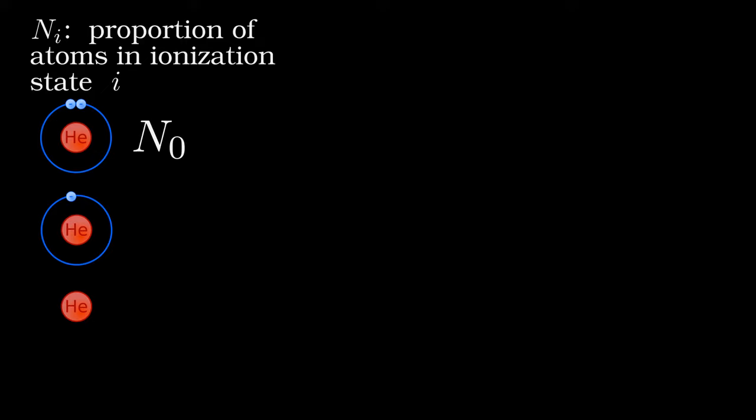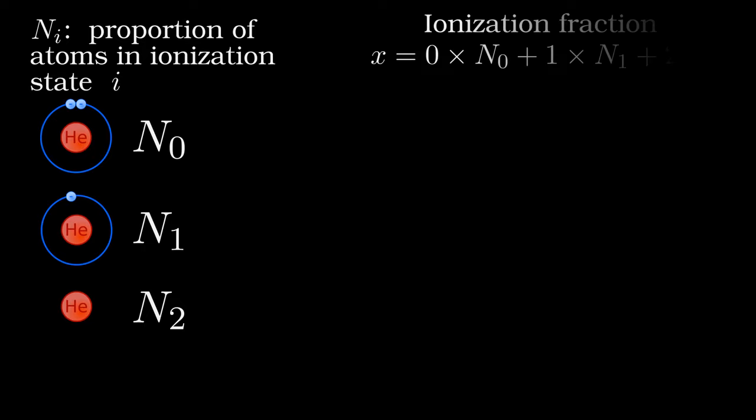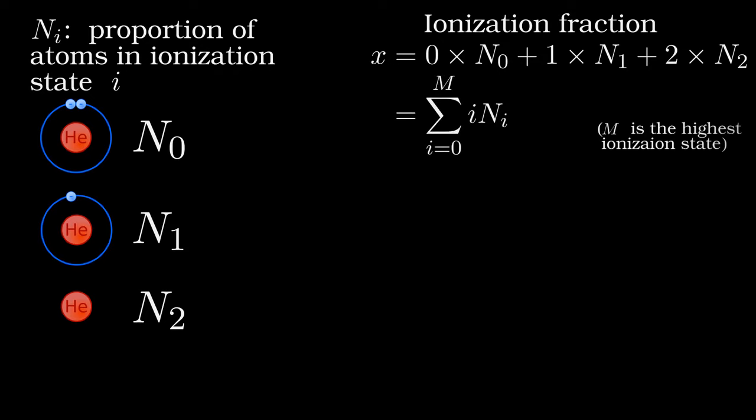As we have seen, atoms in different states of ionization are present in different proportions in the plasma. Let's label these proportions with the letter N, and then a subscript for the number of times that group of atoms has been ionized. The ionization fraction is then a weighted sum over these fractions. Zero times the proportion of neutral atoms N_0, one times the fraction of once ionized atoms N_1, and so on. We can form another equation by observing that all these proportions must sum to one, a kind of normalization condition.